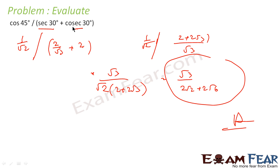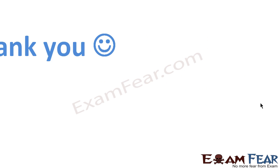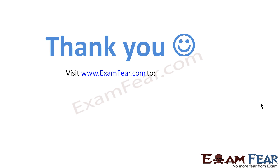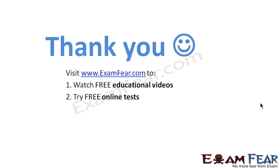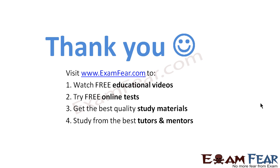It is advisable that you should learn all these values — sin theta, cos theta, tan theta at least for 0, 30, 45, 60, and 90 degrees. You should know all the trigonometric ratios. Thank you. Visit examfear.com to watch free educational videos, try free online tests, get the best quality study materials, and study from the best tutors and mentors.